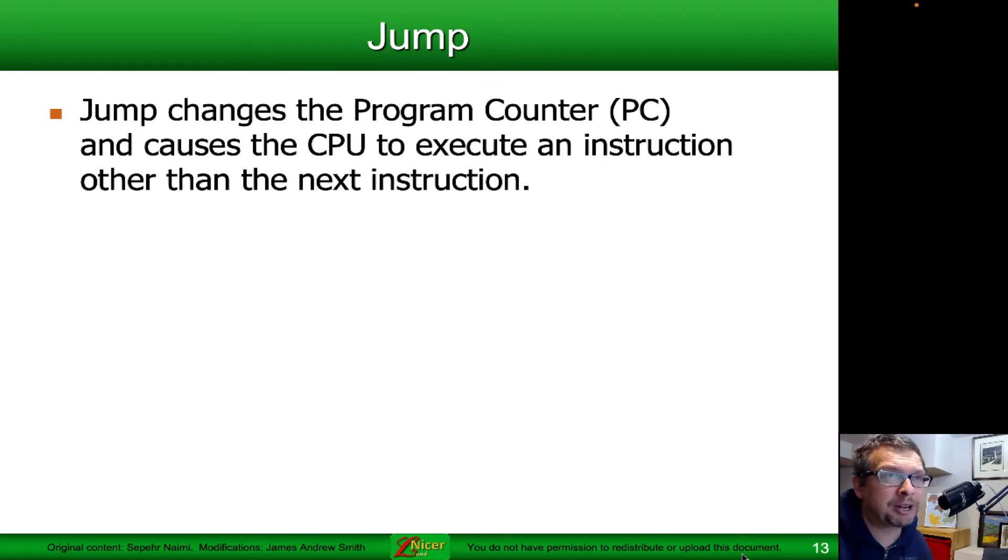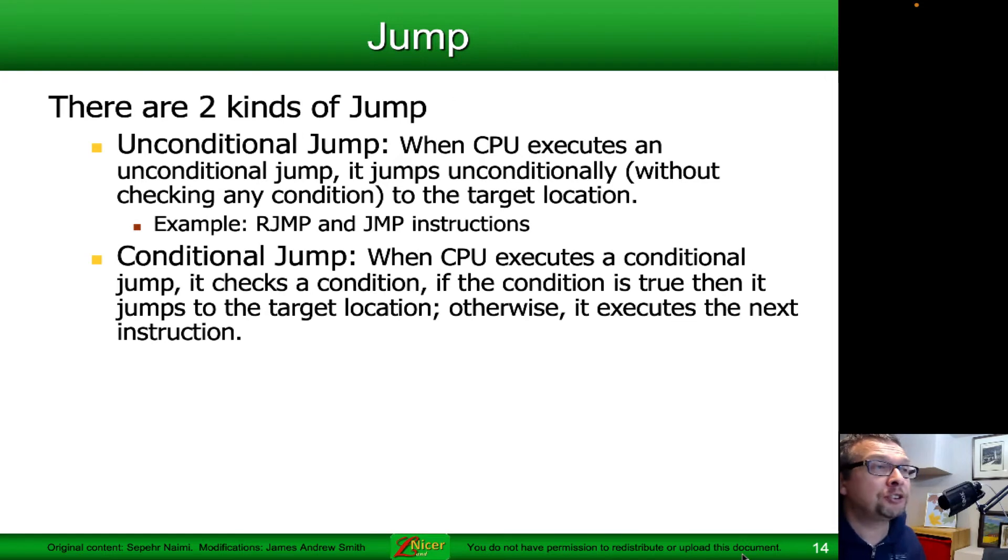There are two kinds of jumps: the unconditional jump, which is what we're going to talk about today—the RJMP or the JMP or the IJMP—and then there's conditional jumps, which are effectively what most people call branches. The conditional jumps are the ones that you find in things like loops or if statements, whereas the unconditional jumps are basically a way of going from one location of memory to the other location of memory without checking for a particular condition.